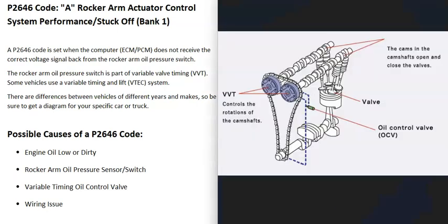Many vehicles have what's called variable valve timing, which can adjust the timing as the engine is running. This is a very good system — it can help give better performance at higher RPMs and also allow the vehicle to get better fuel economy. But when you get a P2646 code, the computer is seeing some kind of problem inside the system that needs to be troubleshot.